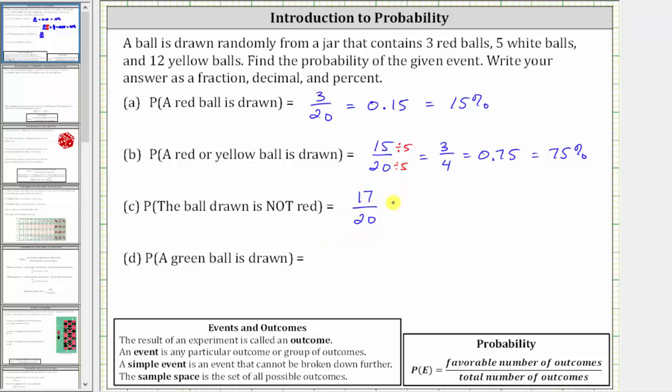Converting to a decimal, 17 divided by 20 is equal to 0.85, which as a percentage is 85%.